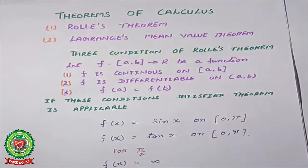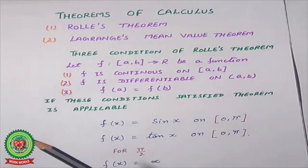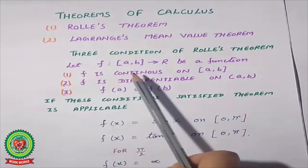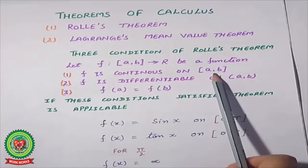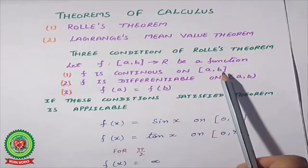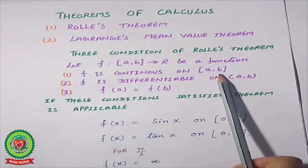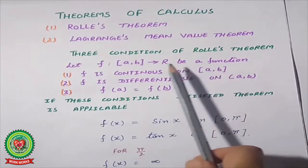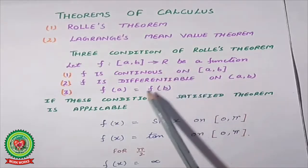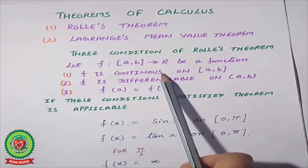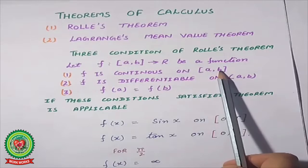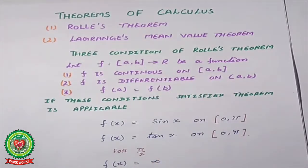Rolle's theorem has some conditions. There are three basic conditions, and if those conditions are satisfied, only then is Rolle's theorem applicable. First condition: the given function must be continuous on the given closed interval — meaning including the endpoint values. For any real number substituted in the function, a definite answer must exist.